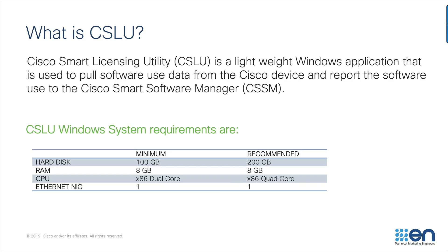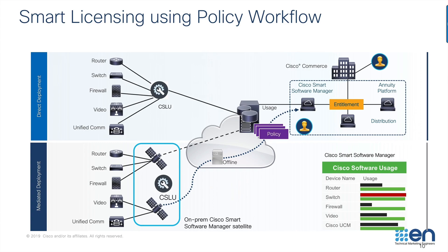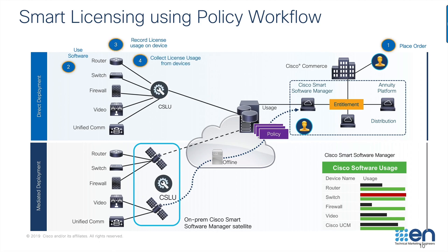In the broader architecture, the customer places an order in CCW. We have mandated a smart account at the time of purchase. In CCW we have introduced the PNP license queue. The device ships to the customer location, is booted up, and can start using the software as is. It records usage information on the device, which is then sent using pull or push models to CSLU, which reports to CSSM in the cloud at policy-driven intervals.